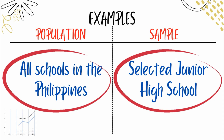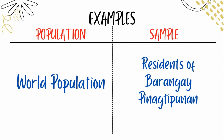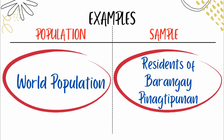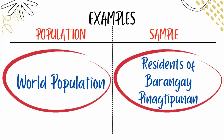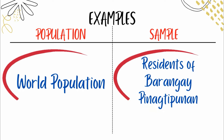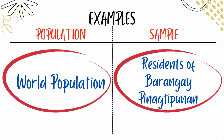Let's have another example. Population: world population — all the people in the entire world. From that world population, we can just take a few, like the residents living in Barangay Pinagtipunan. That's a sample. Remember: population is broad, while sample is very specific.